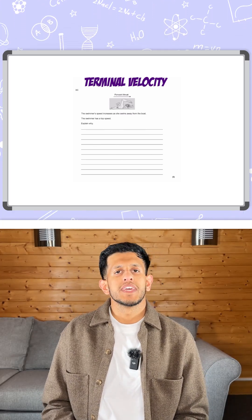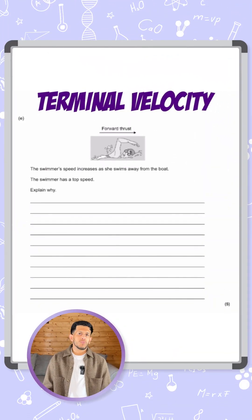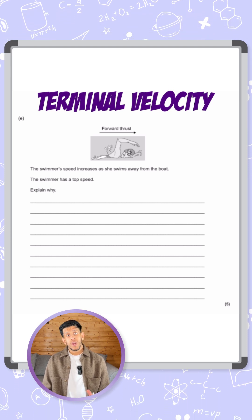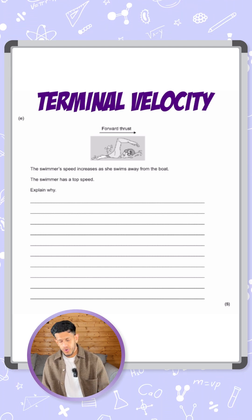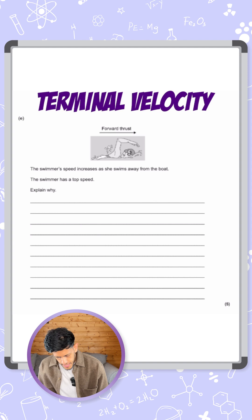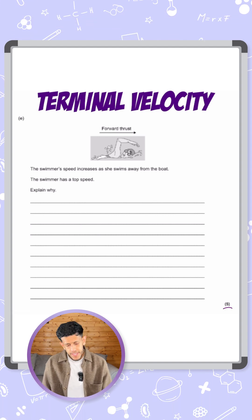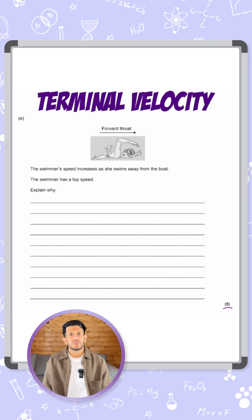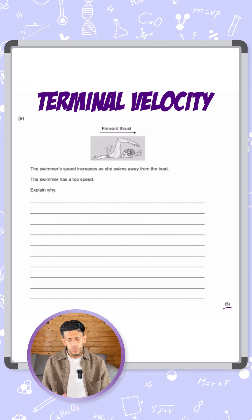All right, so there aren't many worded questions in the motion topic, but here is one on terminal velocity, and it can come up a few times. It's a good way to make sure you memorize it to get strong marks. This question you can see is worth five marks, so let's take a look at it. It says the swimmer's speed increases as she swims away from the boat. The swimmer has a top speed. Explain why.